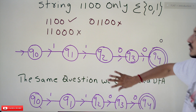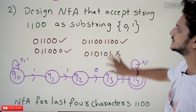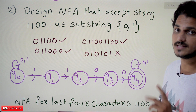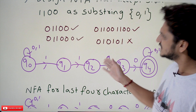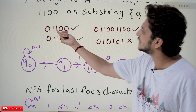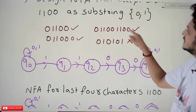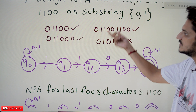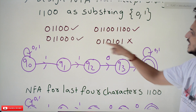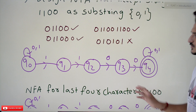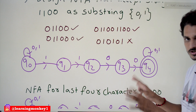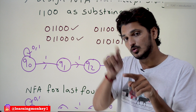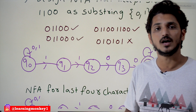Coming to the second question: design an NFA that accepts strings with double one double zero as a substring. Inputs like zero double one double zero are accepted because the substring double one double zero is present. Double one double zero double one double zero is also accepted — one occurrence is enough. A string without double one double zero is not accepted. The base logic is the same: whenever we find one one zero zero, we reach the final state. But here, on taking input one, we are moving to both q0 and q1.